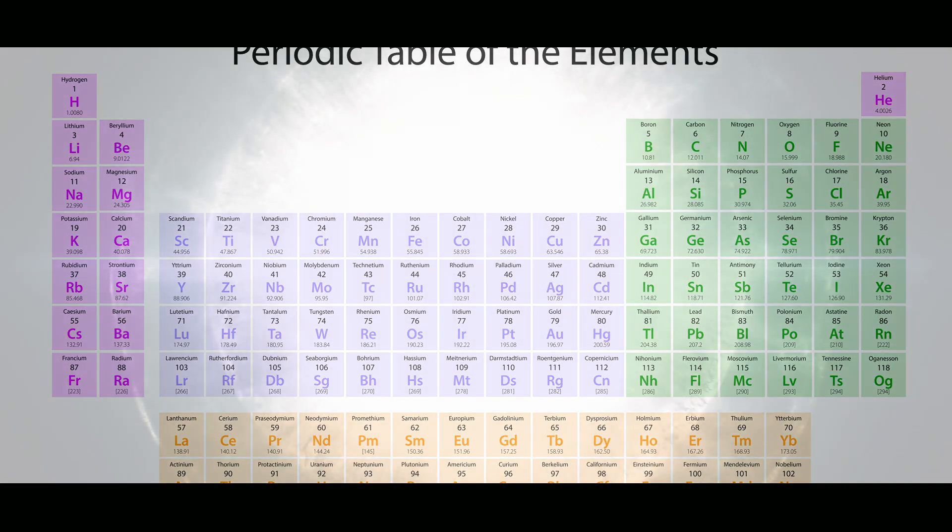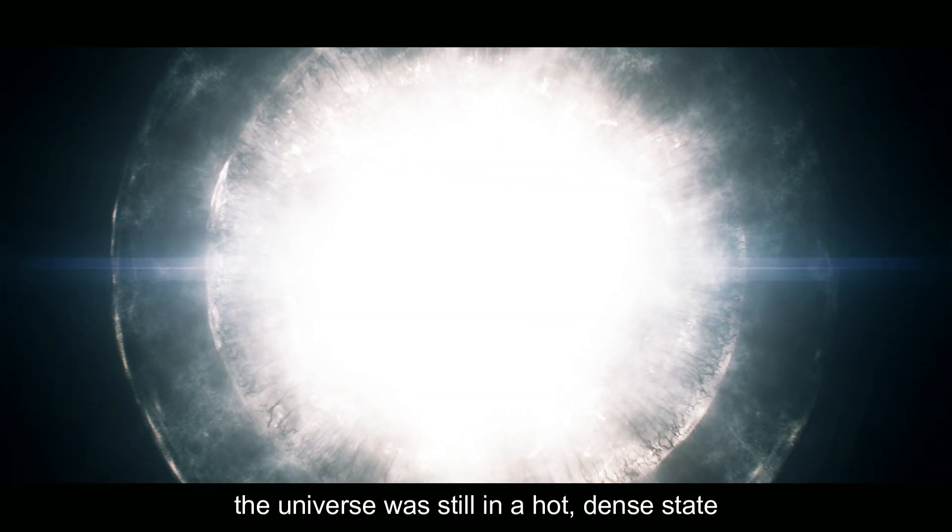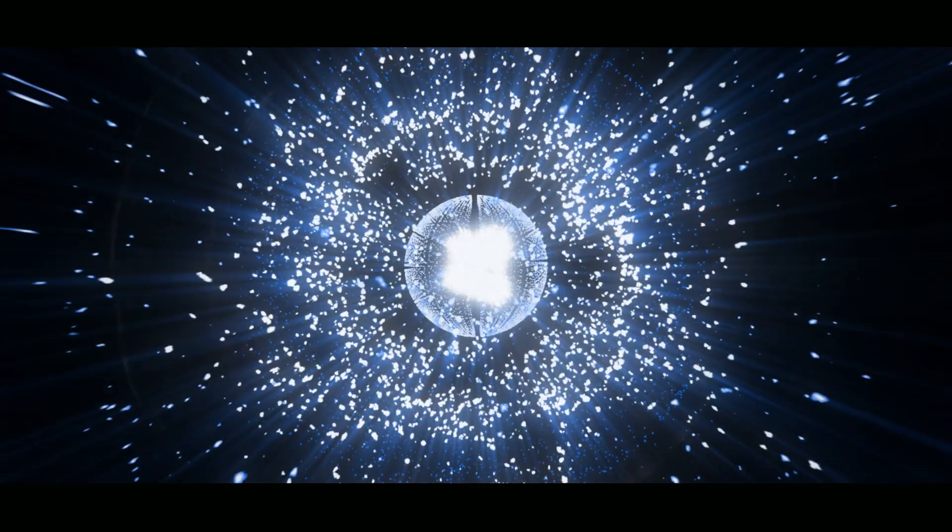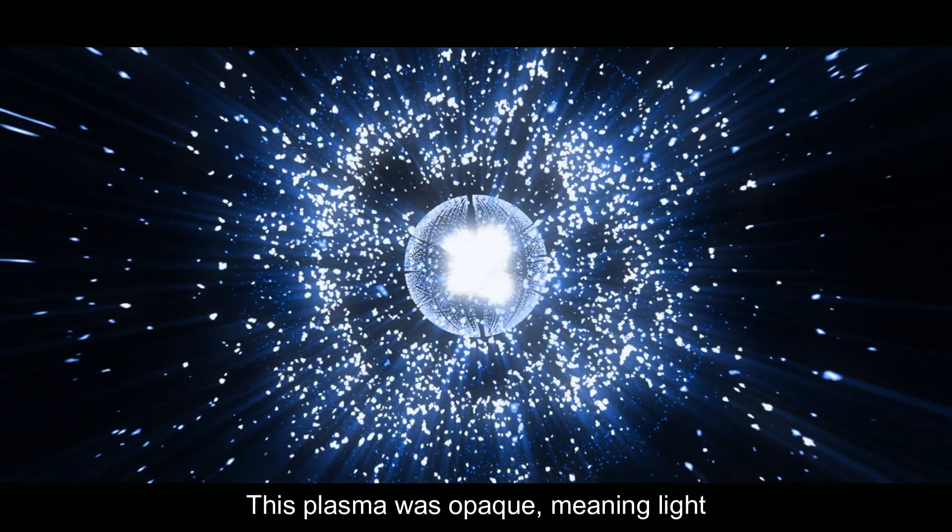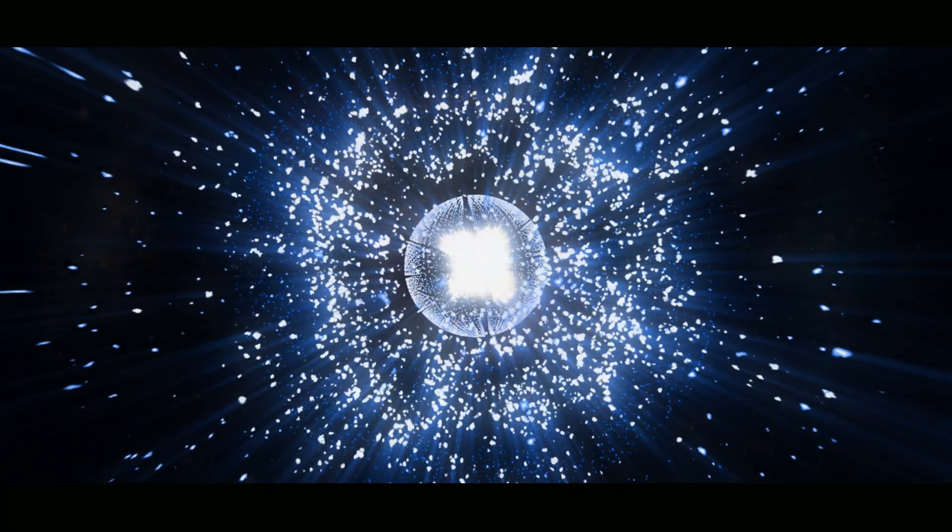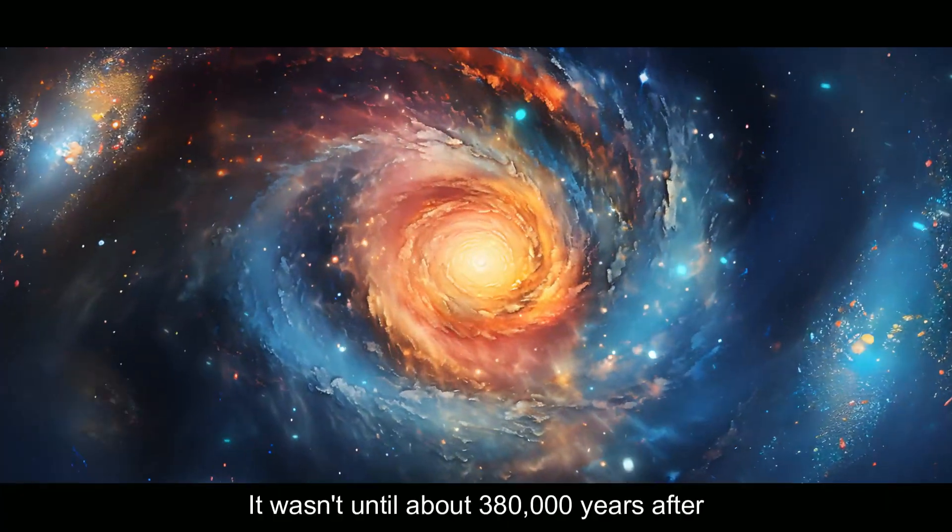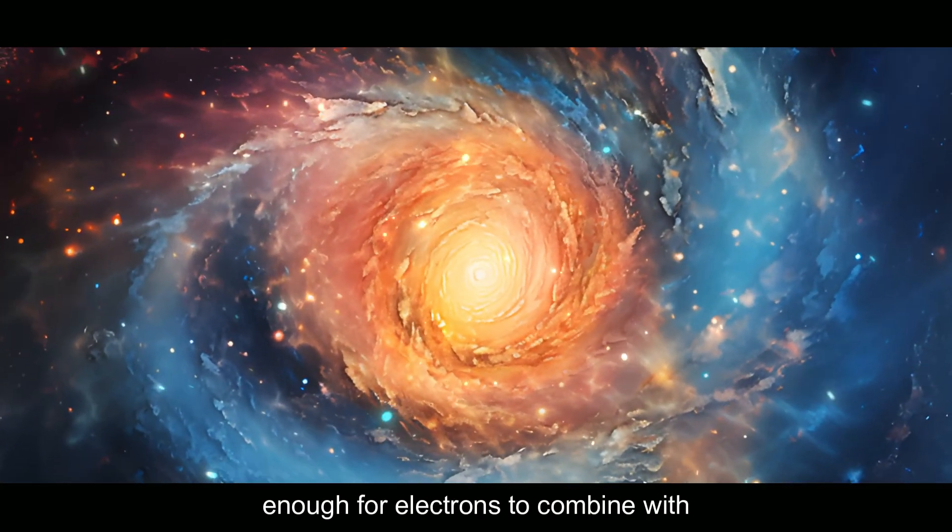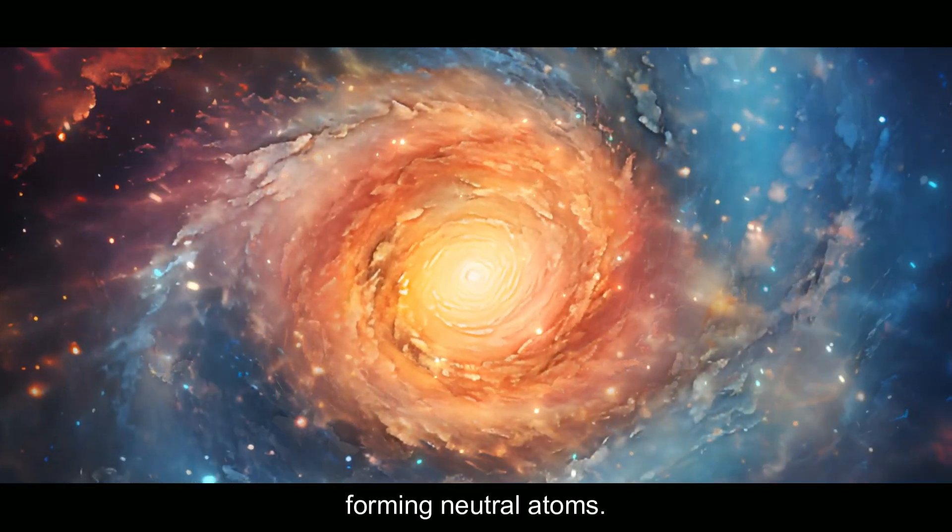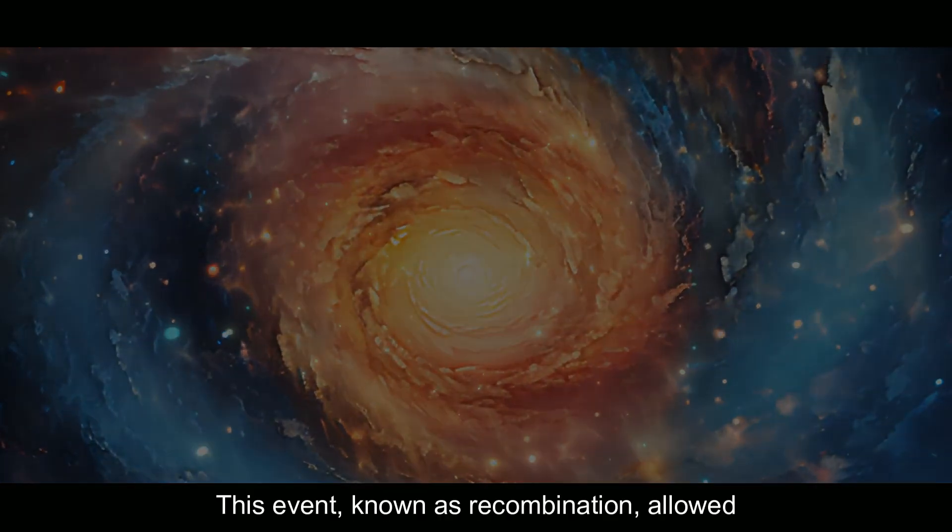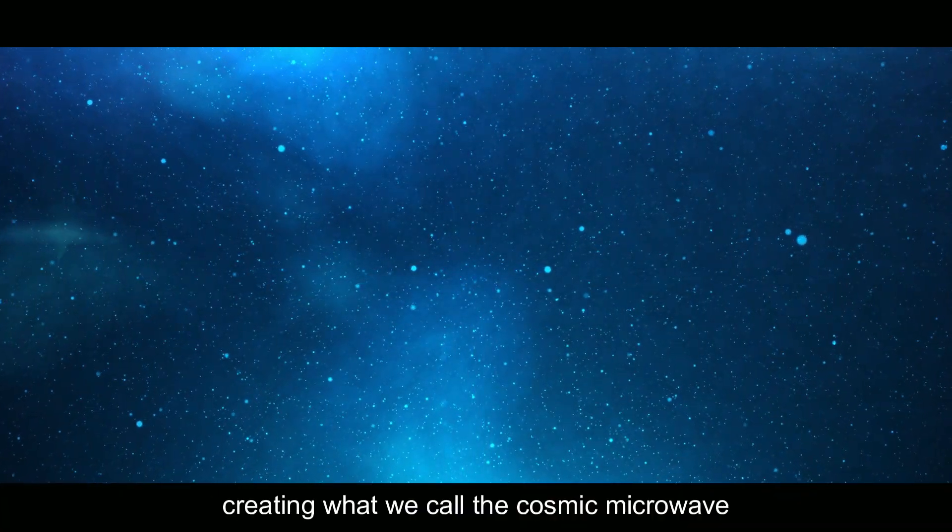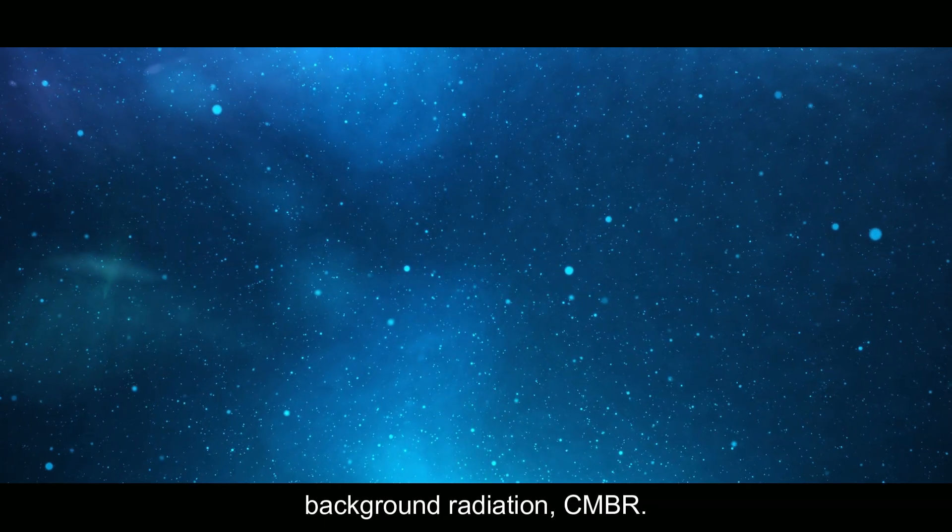However, the universe was still in a hot, dense state, filled with a plasma of charged particles and radiation. This plasma was opaque, meaning light couldn't travel freely. It wasn't until about 380,000 years after the Big Bang that the universe cooled enough for electrons to combine with nuclei, forming neutral atoms. This event, known as recombination, allowed light to travel freely for the first time, creating what we call the Cosmic Microwave Background Radiation.